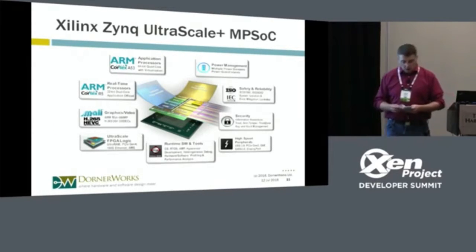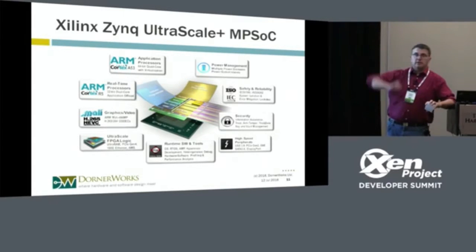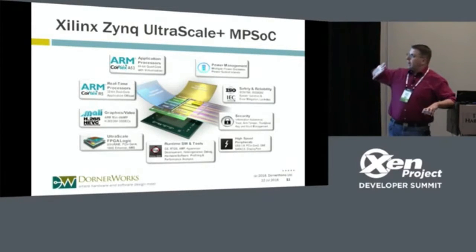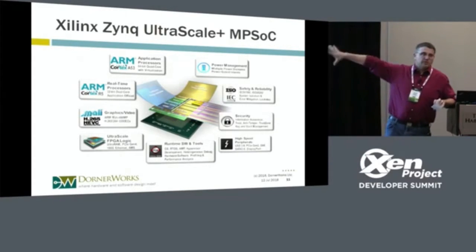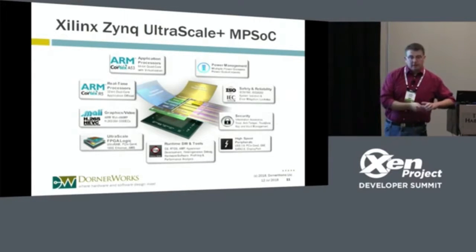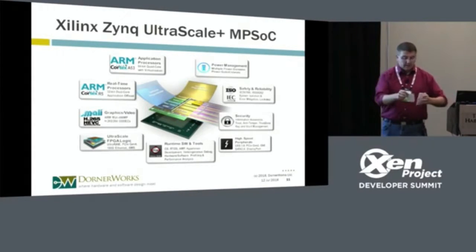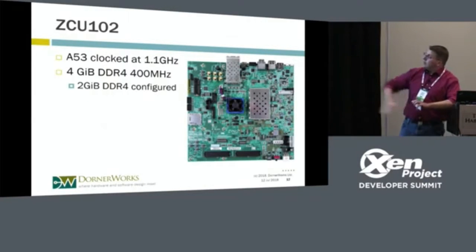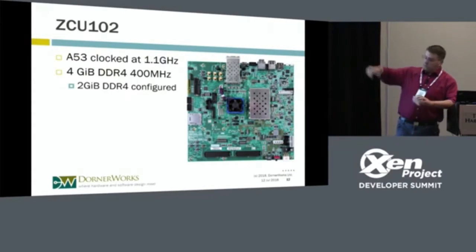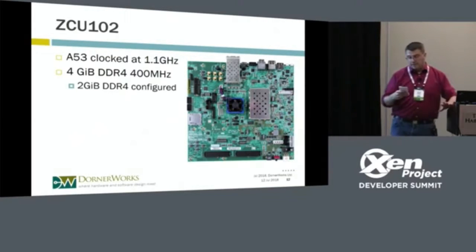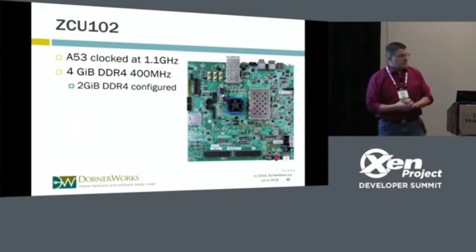The new hardware we're using is the Xilinx Zynq UltraScale+ MPSoC, which came out late last year. As an embedded engineer, this chip is amazing — it has a pair of R5 processors, a GPU, an SMMU V2, and an FPGA. Most importantly, it has a quad A53 cluster with GIC V2, 64 kilobytes of L1 cache, and one megabyte of shared L2 cache. Our development board is the ZCU-102, with the A53s clocked at 1.1 GHz and DDR4 at 400 MHz.